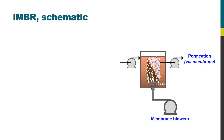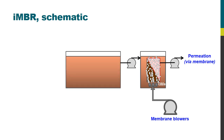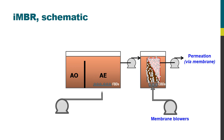That sludge has to come from somewhere, and it is from the biological process tank, which is normally divided into two zones: an anoxic zone and an aerobic zone. There are two different biochemical functions going on in those two zones. The aerobic zone is fitted with fine bubble diffusers supplied from the process air blowers, and that generates a stream of fine bubbles of air whose primary purpose is to provide the microbiology with the oxygen needed for them to survive.